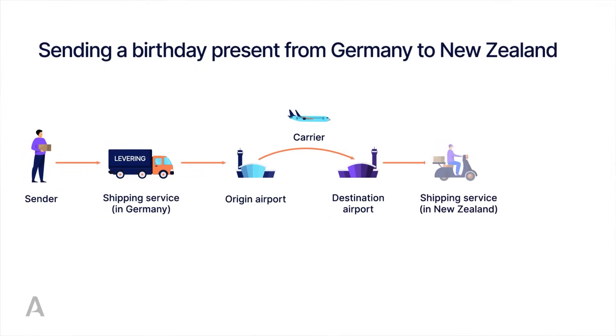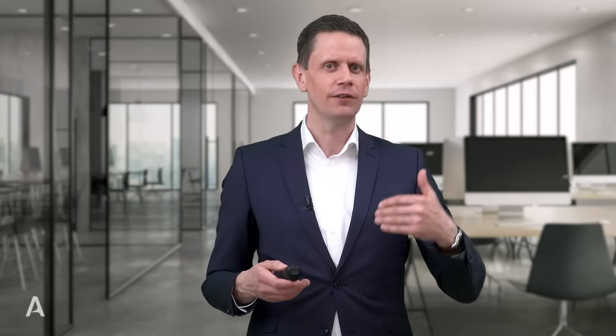Once the shipment arrives in New Zealand, as we saw before in the high-level overview, the process is reversed. Customs clearance needs to take place, and then the handover of the consignment to the delivery partner for the last mile delivery — the so-called door-to-door process. So it's been collected from my door in Germany and delivered to my grandmother in New Zealand.